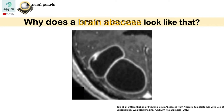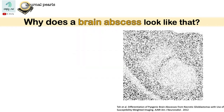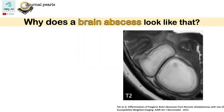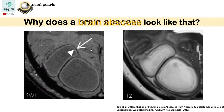Let's start with these two rim-enhancing masses on the right occipital lobe. When we look at the same lesion on the T2 image, we see that the margin has a hypo-intense rim. And on SWI, we see two layers of this concentric rim.